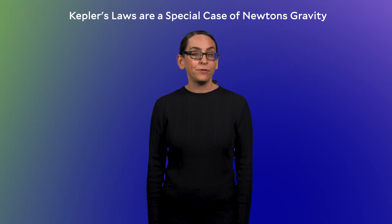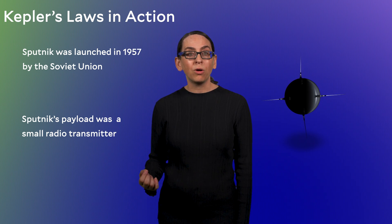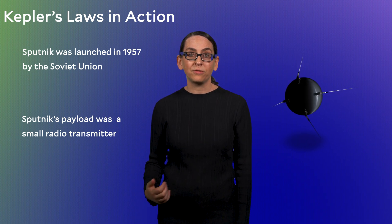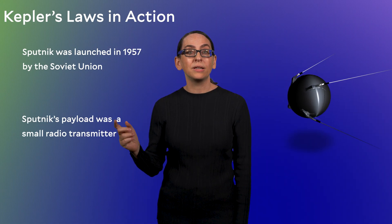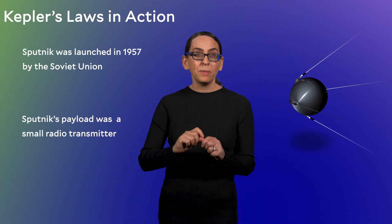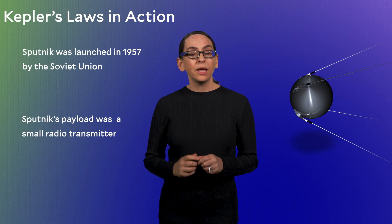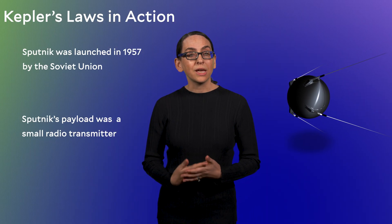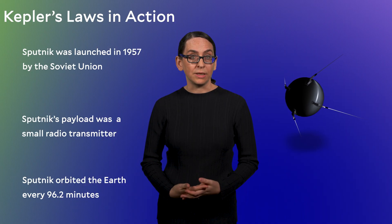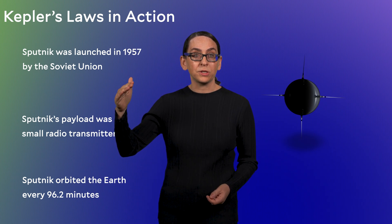Let's use Kepler's third law in a specific example to calculate the orbital distance of Sputnik. Sputnik was the first artificial satellite to orbit the Earth, launched in 1957 by the Soviet Union. Its only payload was a small radio transmitter. If you had a radio receiver anywhere under the orbit of Sputnik, you could detect it going overhead — ham radio operators in the United States could clearly hear the transmission. By waiting for when the transmission repeated, it was fairly easy to measure the orbital period. Sputnik orbited the Earth every 96.2 minutes. With just this information and Kepler's third law, it's possible to calculate how high above Earth's surface Sputnik was orbiting.